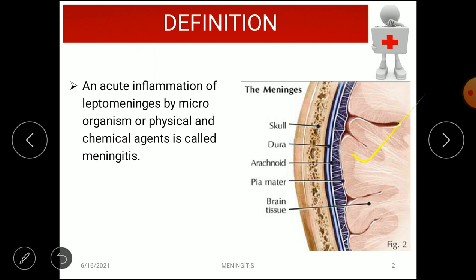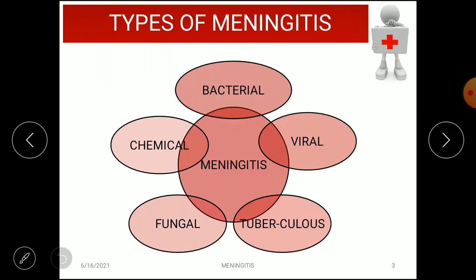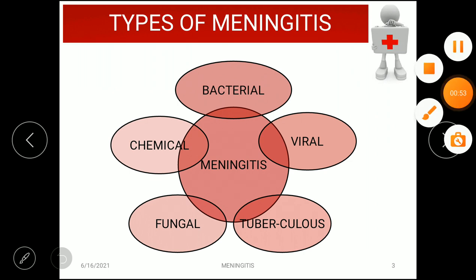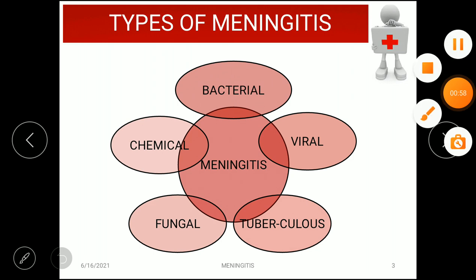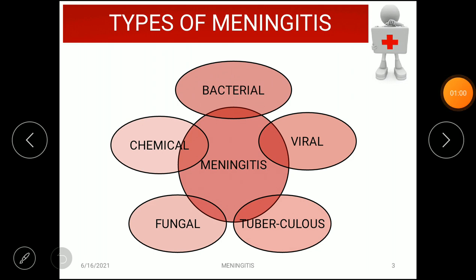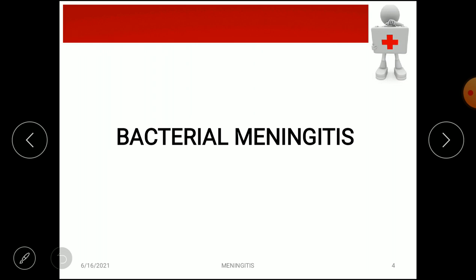In this diagram, the brain tissues are present with three layers: the pia mater, the arachnoid, and the dura mater — these are the meninges — along with the skull layer. The types of meningitis are: bacterial meningitis, viral meningitis, tuberculous meningitis, fungal meningitis, and chemical meningitis.